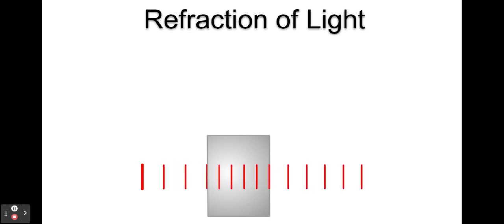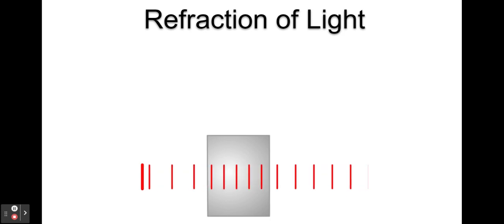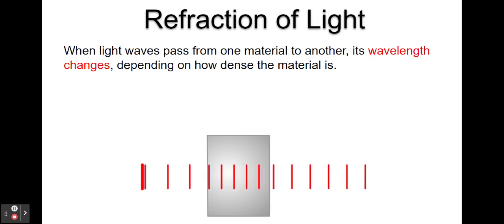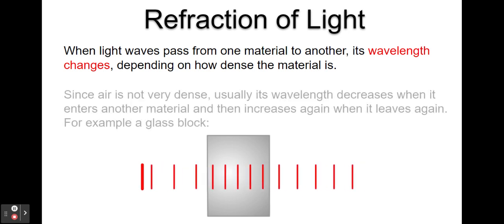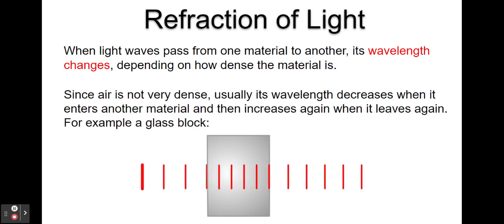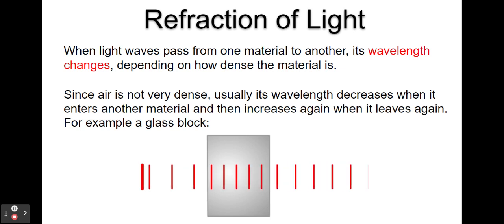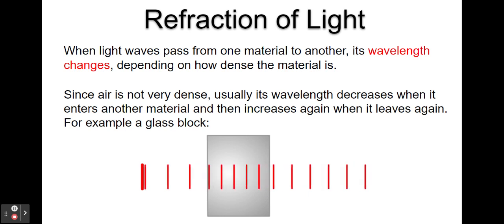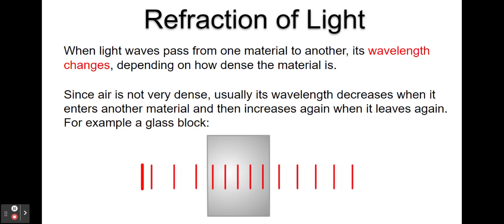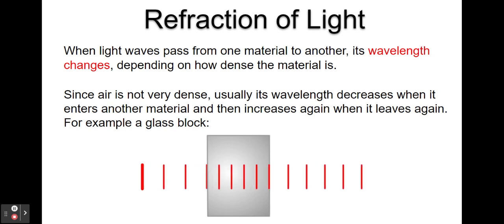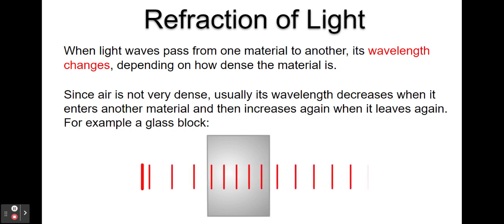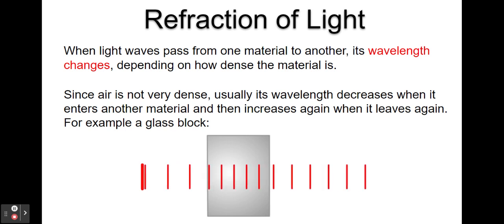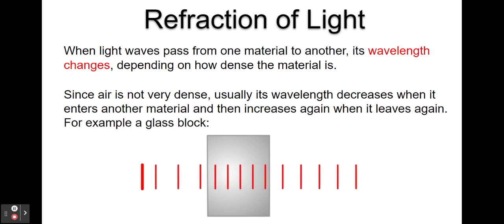The other thing that happens when light enters the block is the wavelength changes. The distance between these red lines decreases as it enters the block and then increases as it goes away, because the wavefronts bunch up as they enter then accelerate away from each other as they leave. So as light enters the glass block its wavelength decreases, and as it leaves it increases.